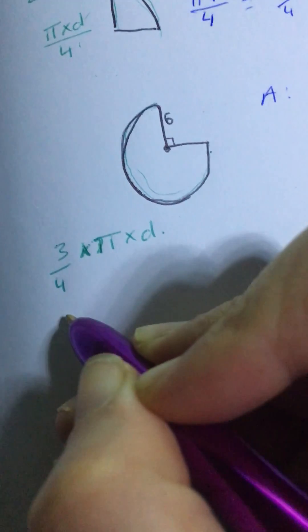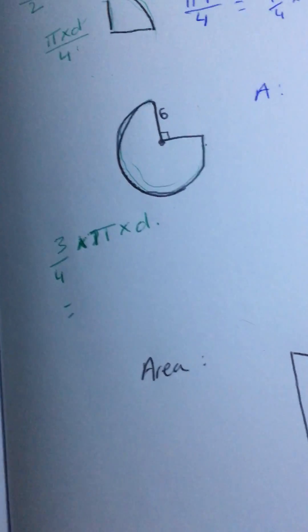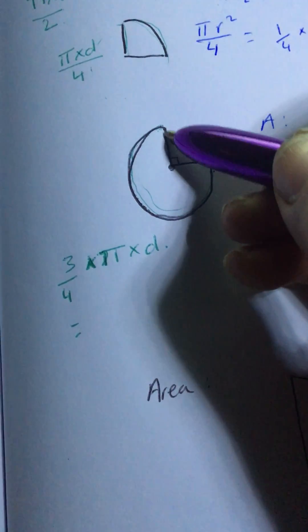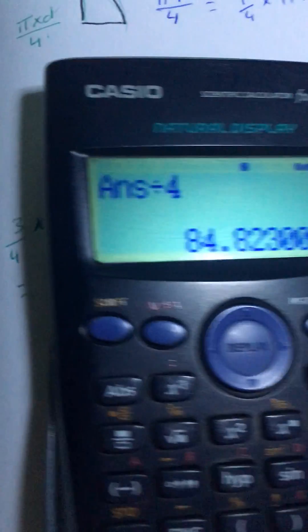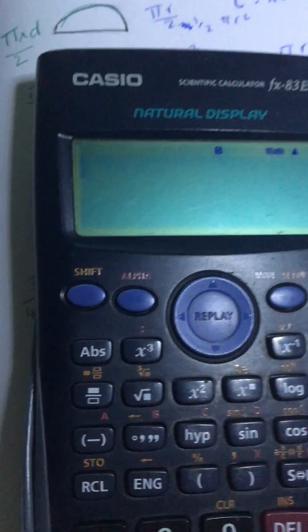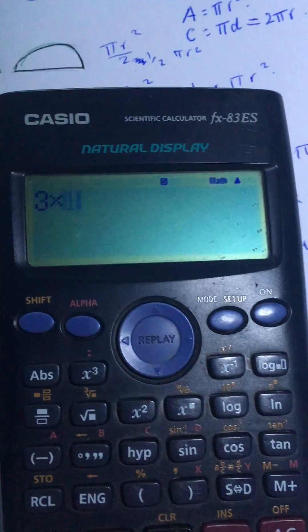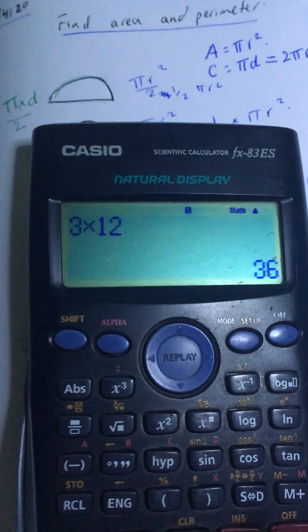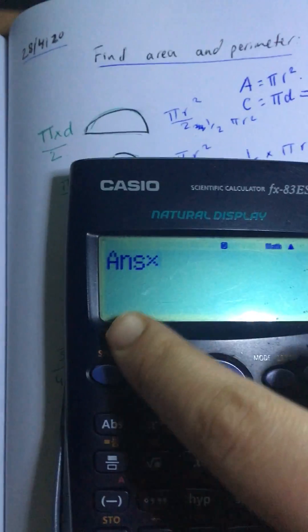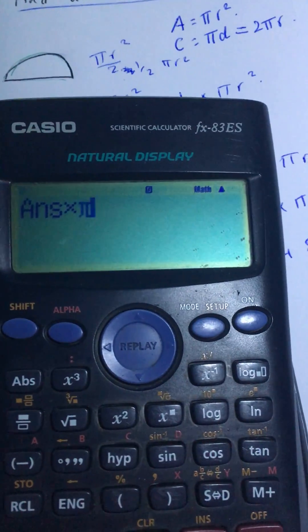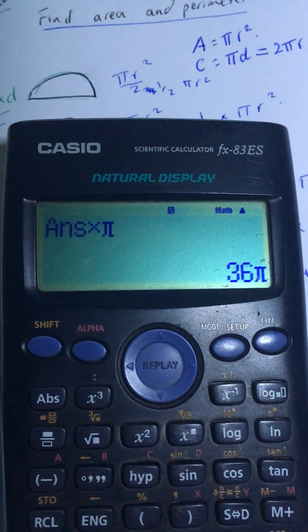I put that in the calculator. So, the radius is 6, so d would be 12. I put 3 times 12, and then I multiply by π, and then I divide by 4.